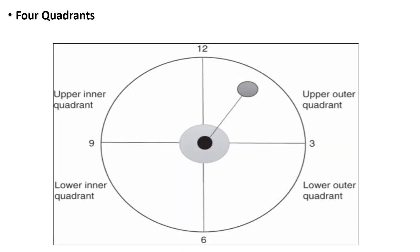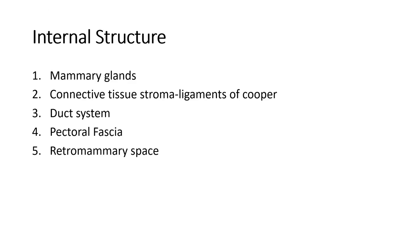Next, in your answer sheet, mention about the 4 quadrants of breast. The 4 quadrants are upper outer, upper inner, lower inner, and lower outer. These quadrants are made after drawing 2 imaginary lines through the center of the nipple. Then mention about the internal structure under this heading: the mammary glands, the connective tissue stroma including the ligaments of Cooper, the duct system of breast, pectoral fascia, and retromammary space.